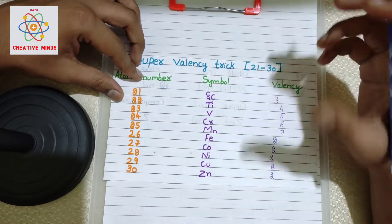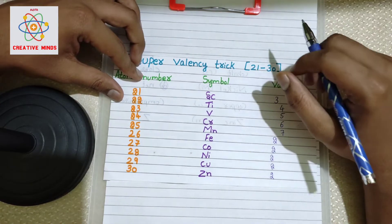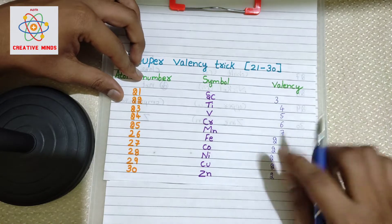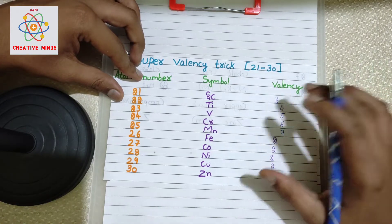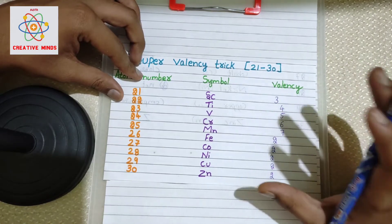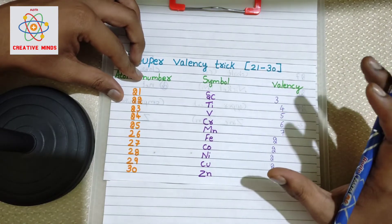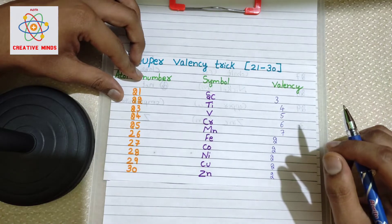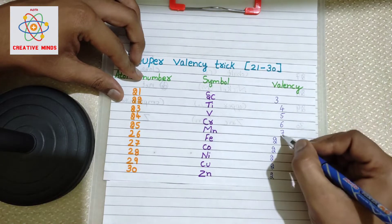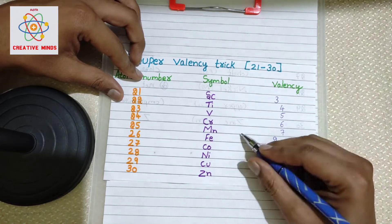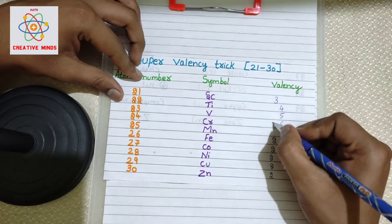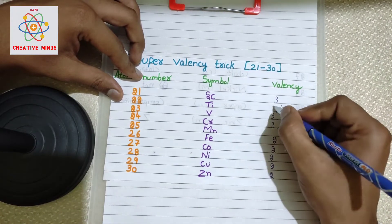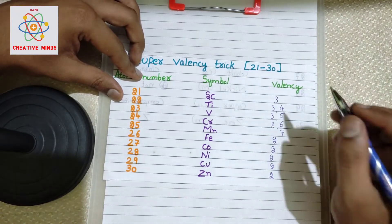Now for some elements there will be more than one valence — not only one valence. Almost all maximum elements in the periodic table have more than one valence. So the elements above manganese will be having three as their additional valence: three, three, and three.